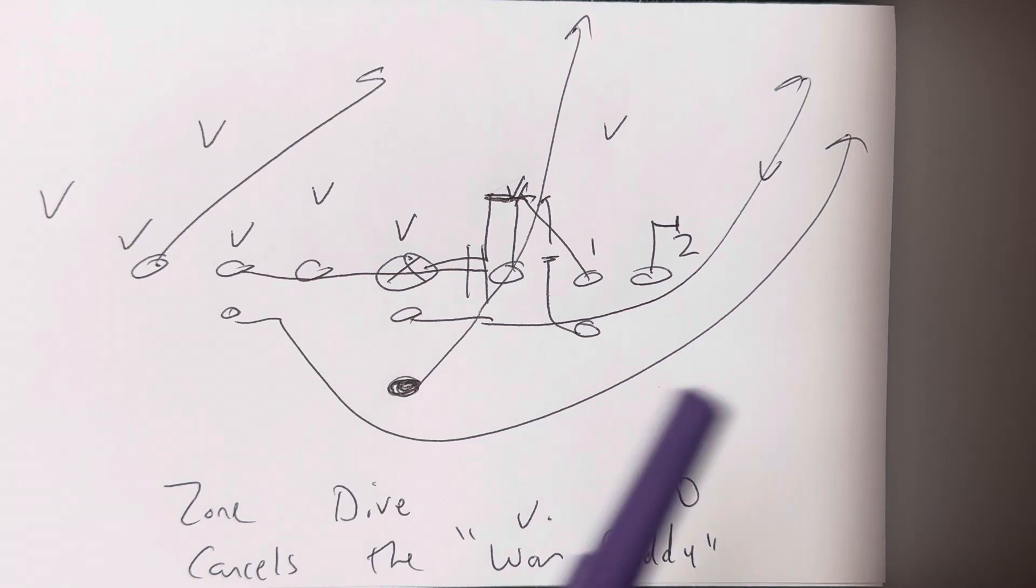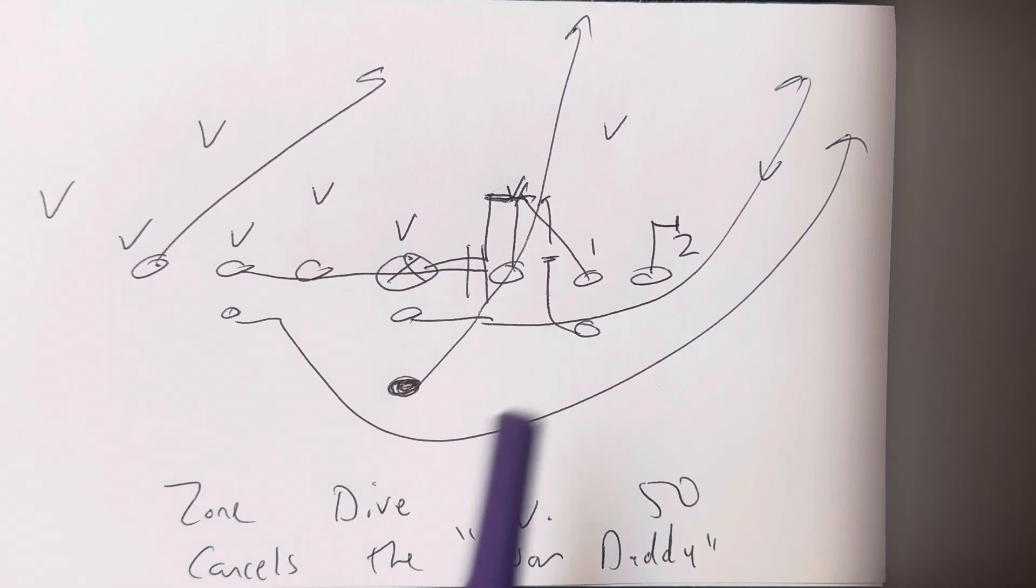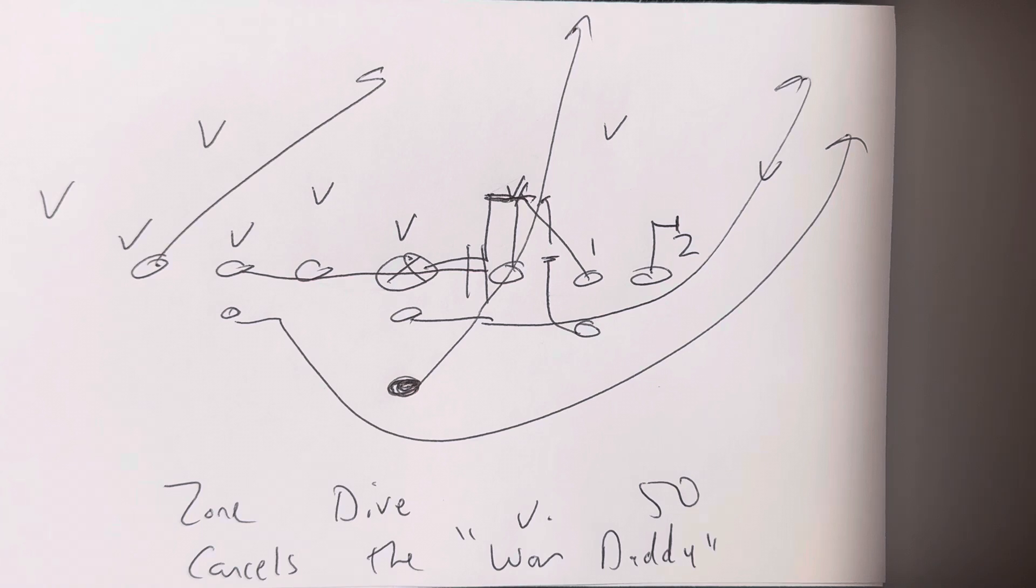So, because of that, what it does is, because the landmark for the B-back is off the tackle's playside hip, it takes this guy out of the play. I remember having a conversation with a very popular former Navy assistant who told me that he goes, if you want to eliminate the zero technique, he goes, you got to run the playoff tackle.